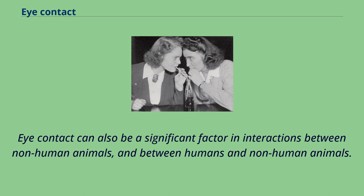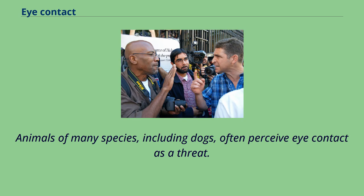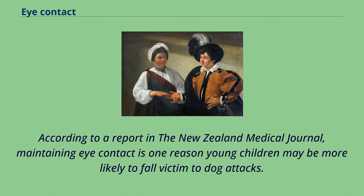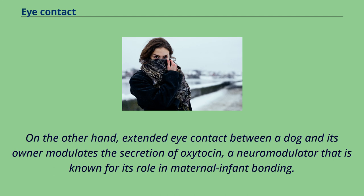Eye contact can also be a significant factor in interactions between non-human animals, and between humans and non-human animals. Animals of many species, including dogs, often perceive eye contact as a threat. Many programs to prevent dog bites recommend avoiding direct eye contact with an unknown dog. According to a report in the New Zealand Medical Journal, maintaining eye contact is one reason young children may be more likely to fall victim to dog attacks. On the other hand, extended eye contact between a dog and its owner modulates the secretion of oxytocin, a neuromodulator known for its role in maternal-infant bonding.